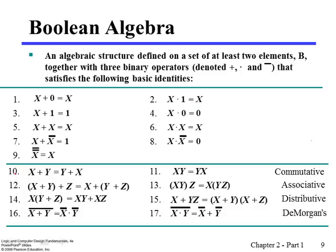From number 10 through 17, we have names for those equations. We have laws: 10 and 11 is called the commutative law, 12 and 13 is called the associative law, 14 and 15 is called the distributive law, and 16 and 17 is De Morgan's law. You may need to memorize the names of the law from 10 through 17.